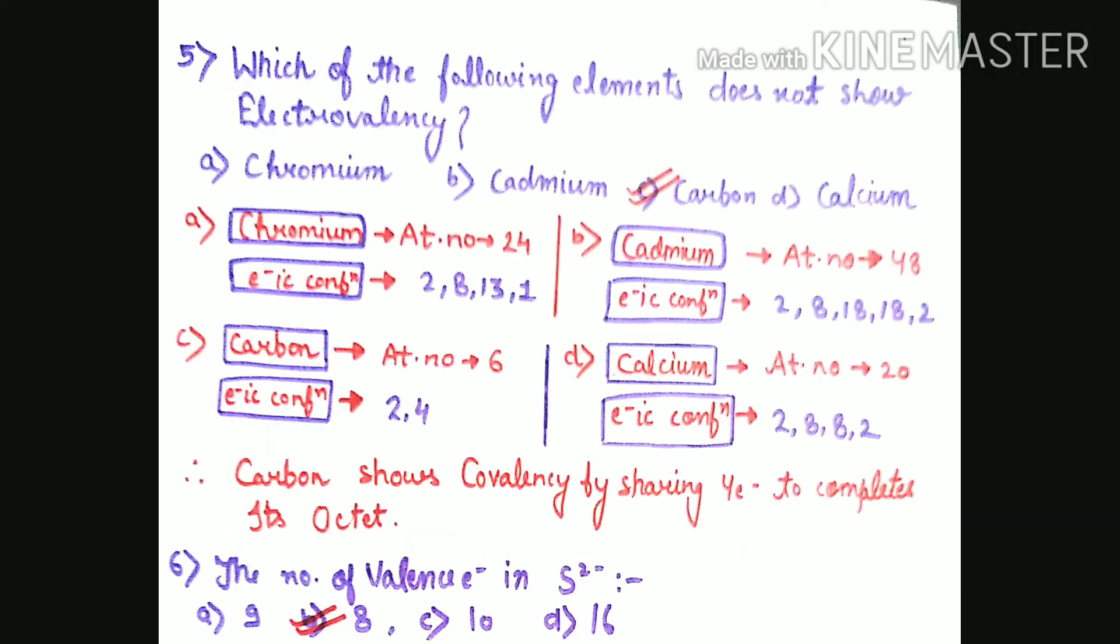Question number 5: Which of the following elements does not show electrovalency - chromium, cadmium, carbon, or calcium? Electrovalency is shown by atoms that either lose electrons or gain electrons to complete their octet.